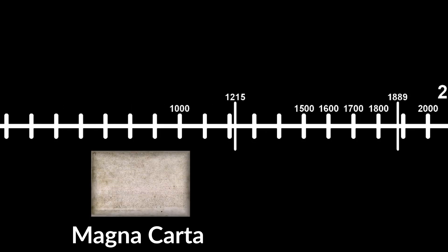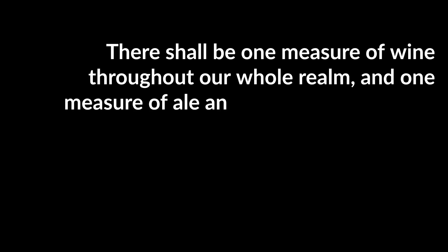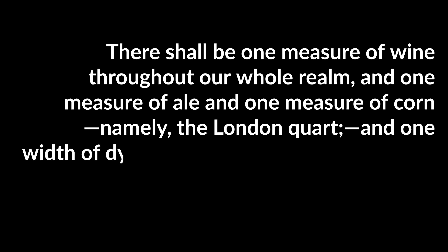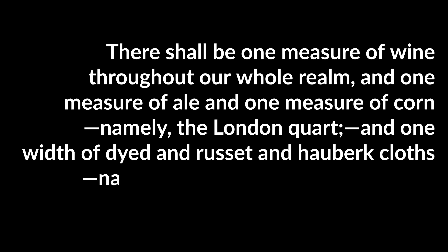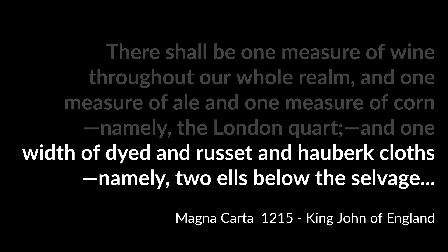In 1215 we have records like the Magna Carta, in which King John of England proclaimed in writing: 'There shall be one measure of wine throughout our whole realm, and one measure of ale, and one measure of corn — namely the London quart — and one width of dyed and russet and hauberic cloths, namely two ells below the selvage.' The second part of that statement says all cloths sold across England would have the same size, namely two ells, which is known today as two yards.